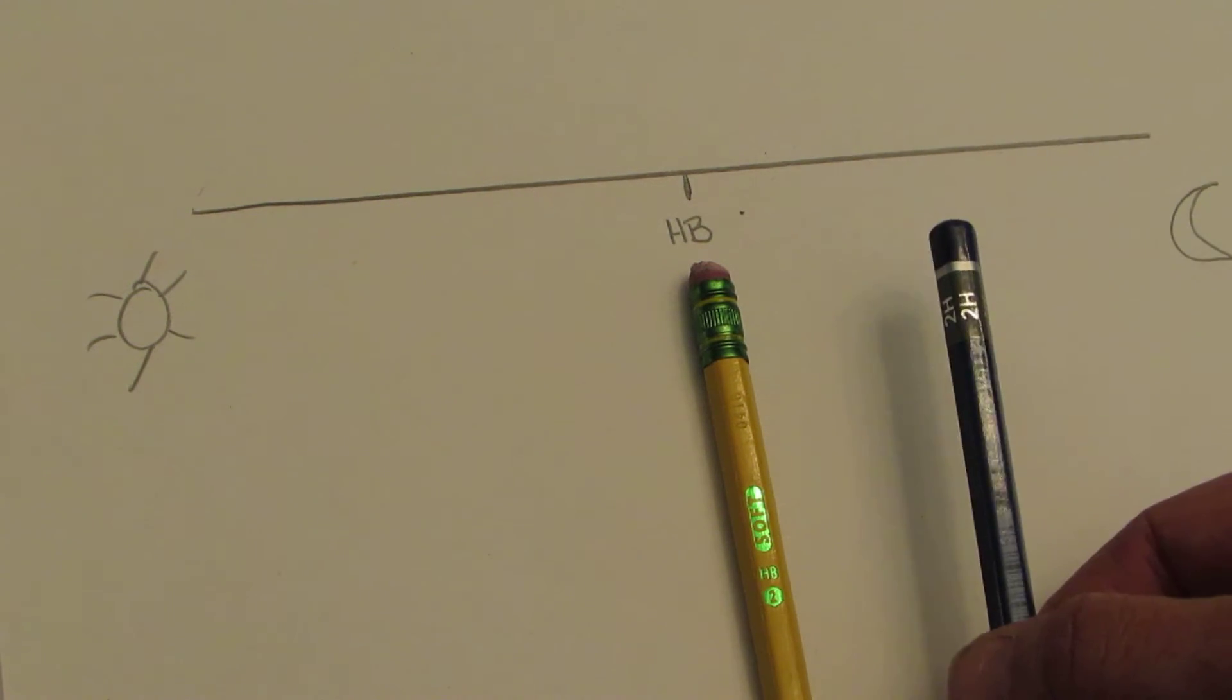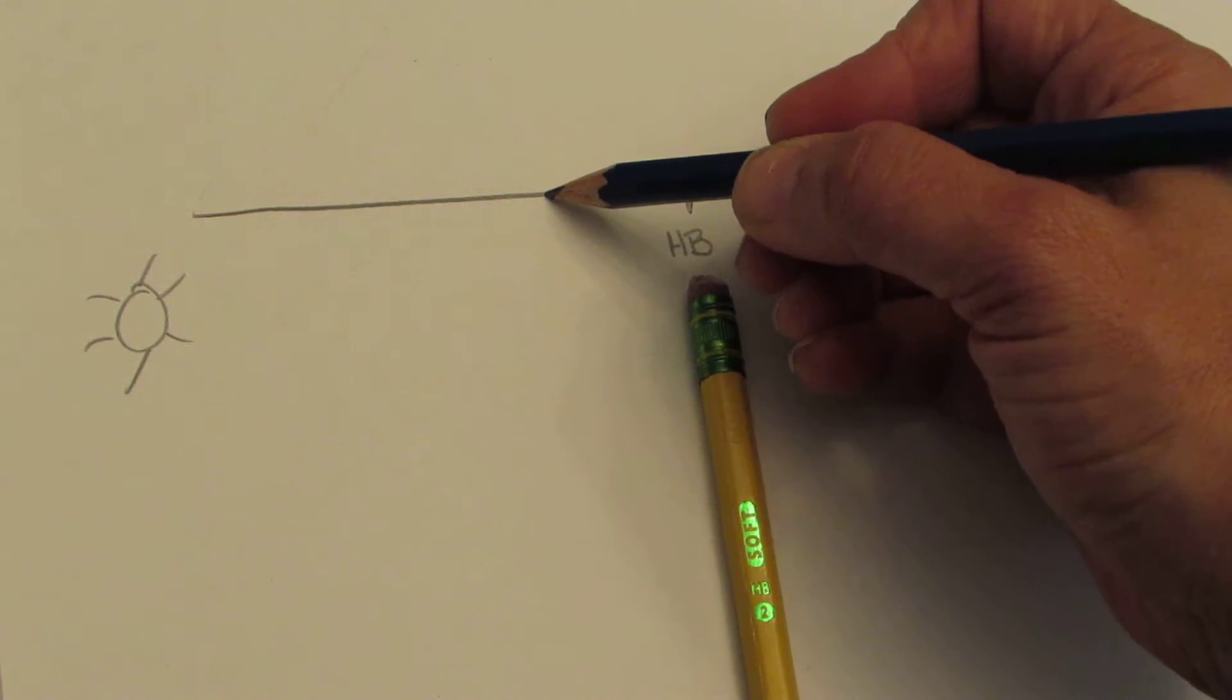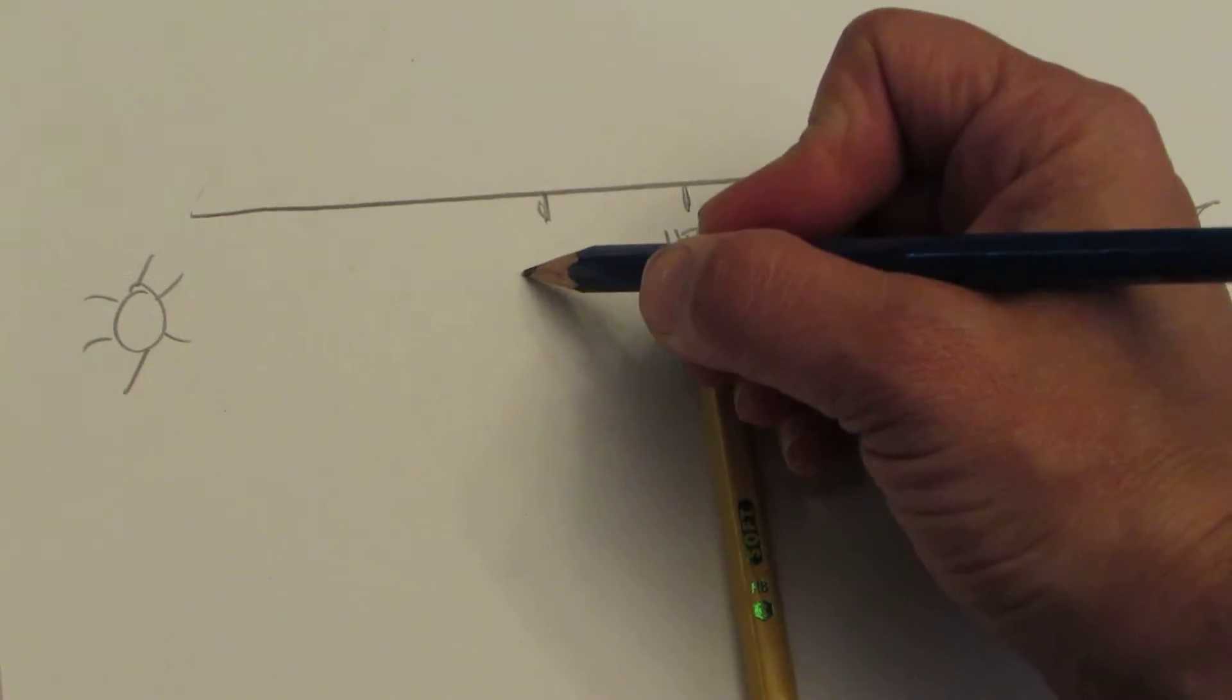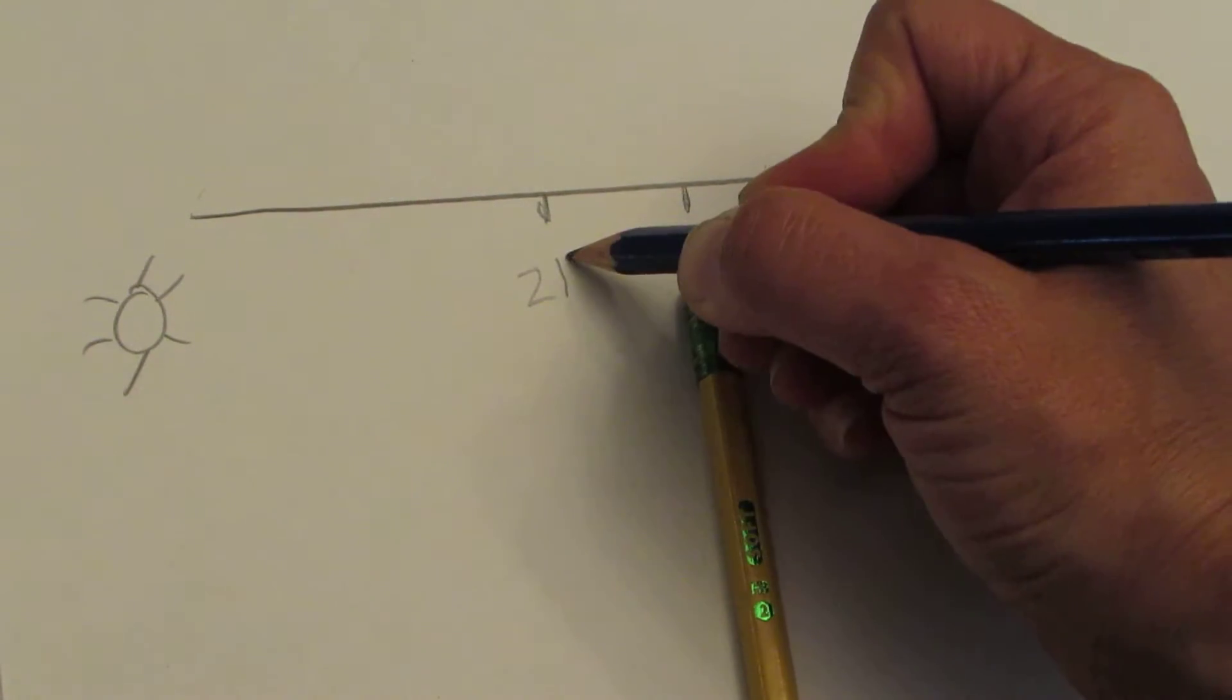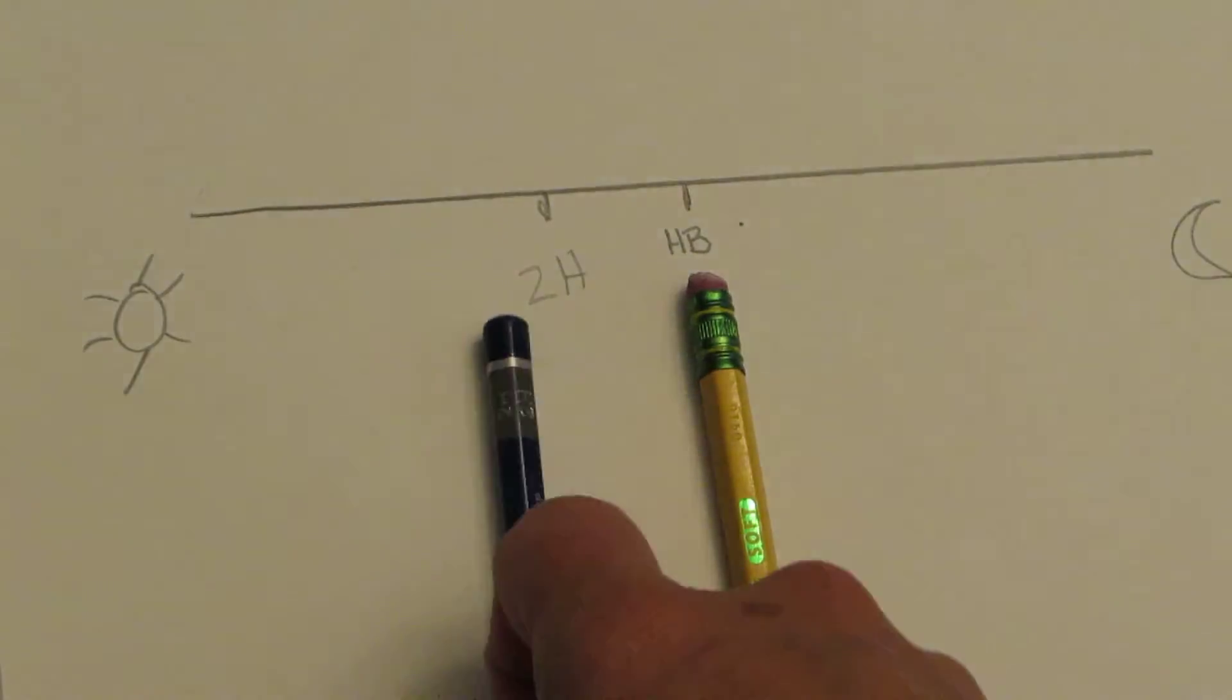All right, the next one that I have here is, let's go over to the lighter side. I have one that is a 2H, so I'm going to go ahead and mark on here that I have a 2H. Just from writing on there, I can tell that it's getting lighter already.